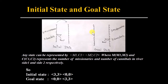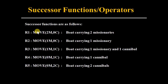The goal state shows 00 on river side one, meaning no missionaries and no cannibals, but on river side two, three missionaries and three cannibals — so that's 0033. Let's define the successor functions to solve this problem. We have defined five successor functions.